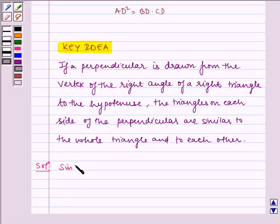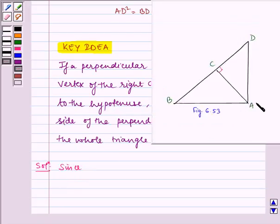Since AC is perpendicular to BD, therefore triangle ACD is similar to triangle ABD by key idea.